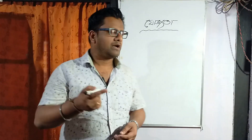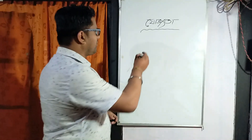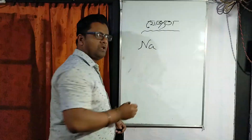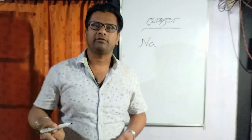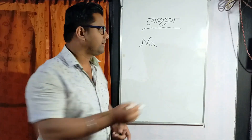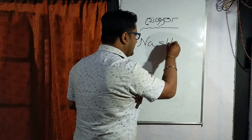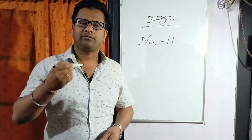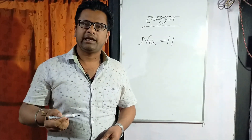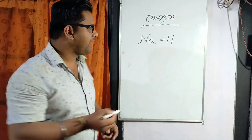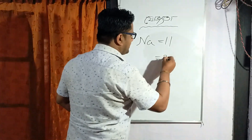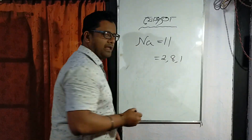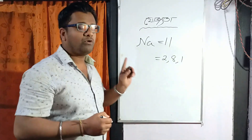This example is sodium. Sodium is 11. So, the electron configuration is 2, 8, 1.